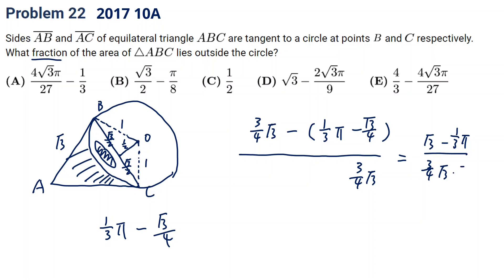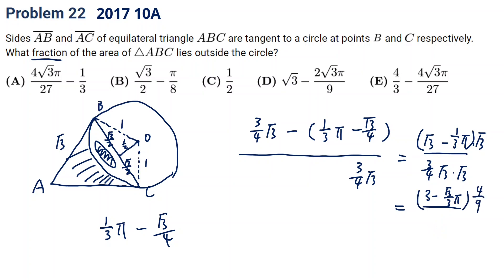Multiplying top and bottom by root three, the denominator becomes nine over four, and the numerator becomes three minus root three over three times pi. Multiplying by four over nine gives four over three minus four over 27 root three times pi. So the answer is E.